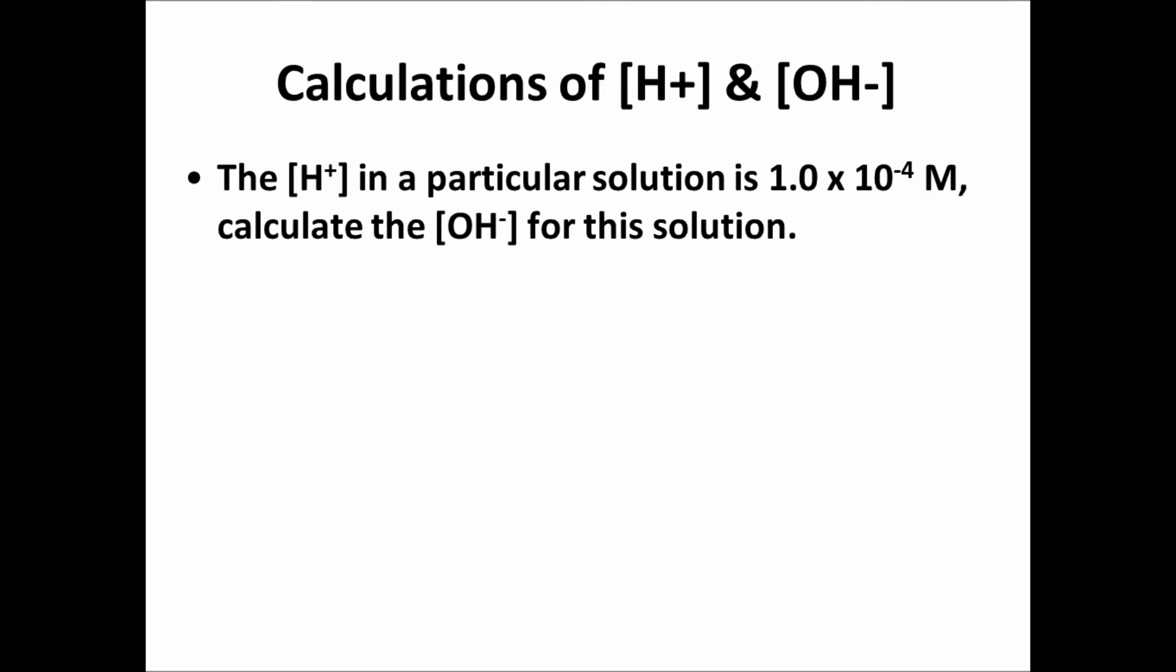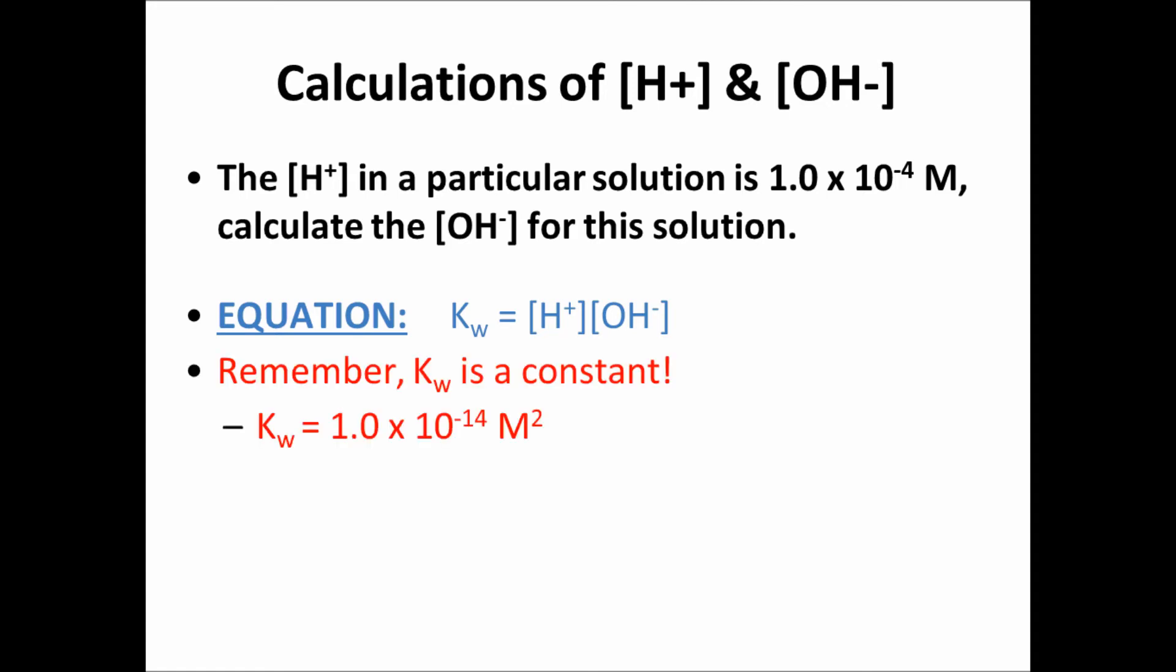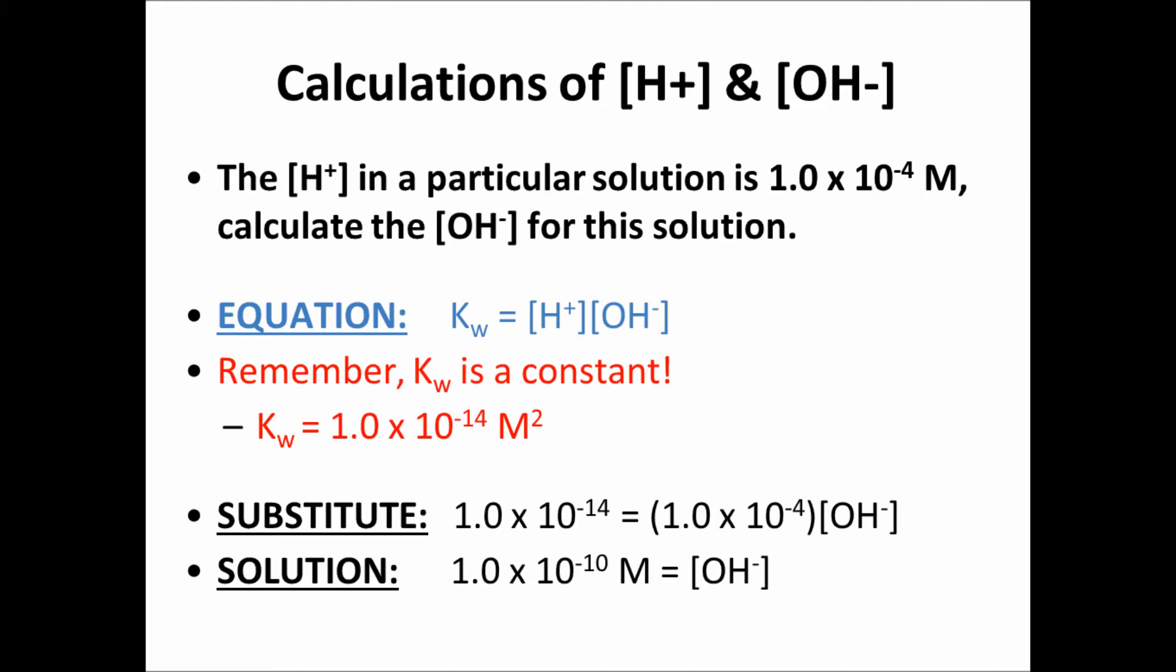Let's look at another one. The hydrogen ion concentration in a particular solution is 1.0 times 10 to the negative 4th molar. Calculate the hydroxide ion concentration for this solution. Once again, we can use the same equation for KW, keeping in mind that KW is a constant and has a set value. If we substitute in our value for our constant and the value for the hydrogen ion concentration provided in the question, we can solve for the hydroxide ion concentration, which is our missing variable. In this problem, we get a hydroxide ion concentration of 1.0 times 10 to the negative 10th molar.